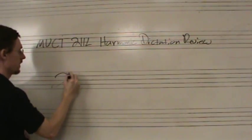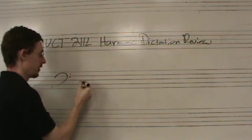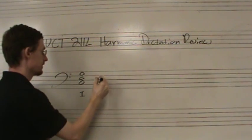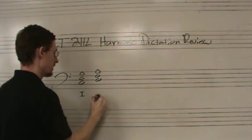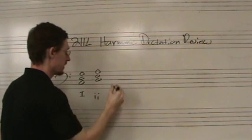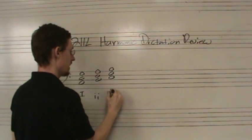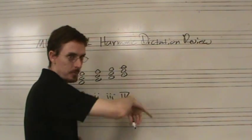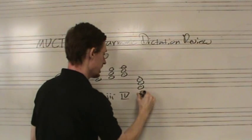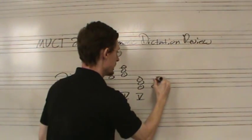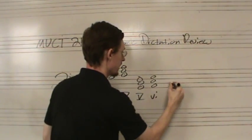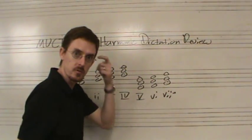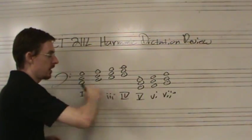We start here with the I chord in major — the I chord is major. The II chord is minor. The III chord is likewise minor. The IV chord is major. The V chord is major. The VI chord is minor. And the VII chord is diminished. Remember, this is indicated by the circle — the diminished circle to indicate its quality.